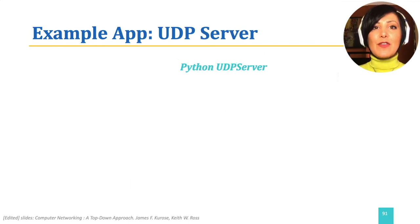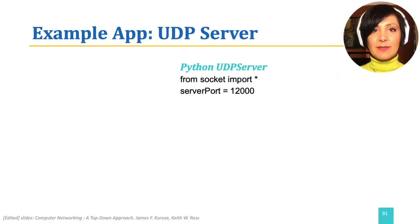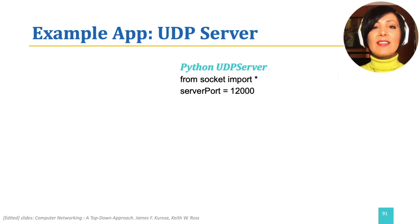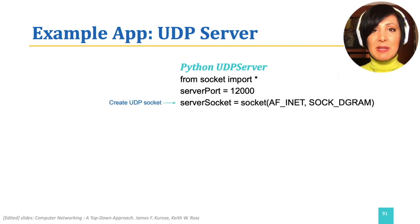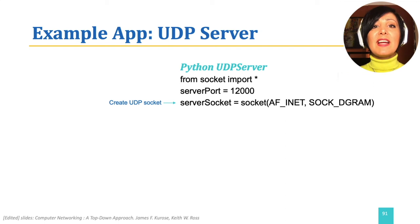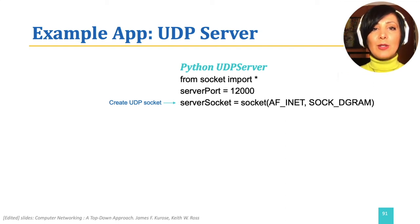The UDP server program also starts with including Python's socket library and defining the server port and the UDP socket — exactly the same port number that the client used, so that communication is possible. We then create the UDP socket for the server, using the same parameters: AF_INET to define the address family as IPv4 and SOCK_DGRAM to define that this is a UDP socket.